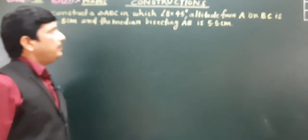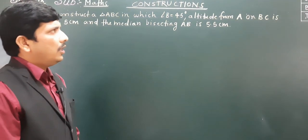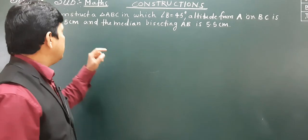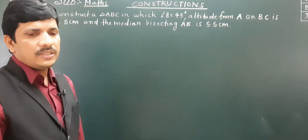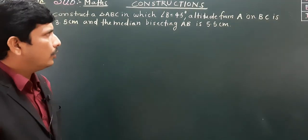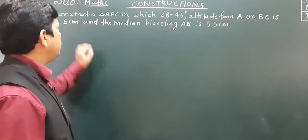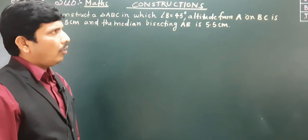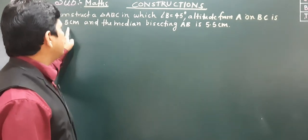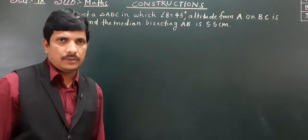Our third problem: construct a triangle ABC in which angle B equals 45 degrees, the altitude from A on BC is 3.5 centimeters, and the median bisecting AB is 5.5 centimeters.